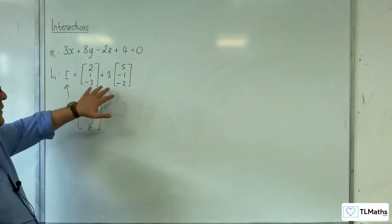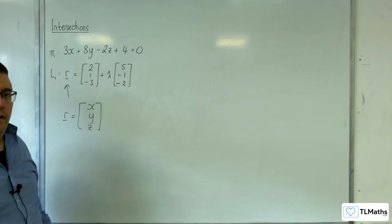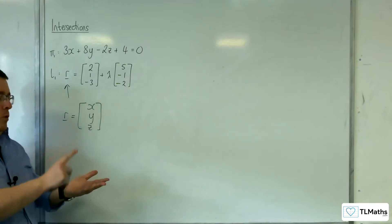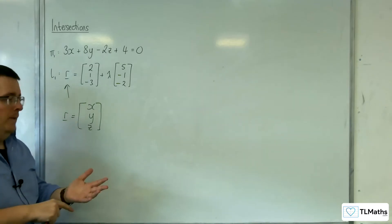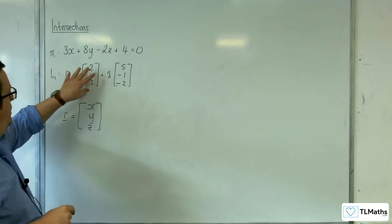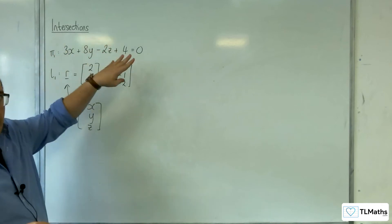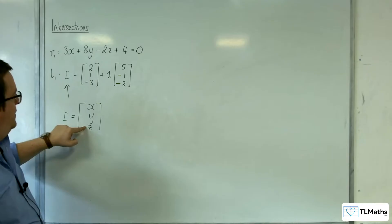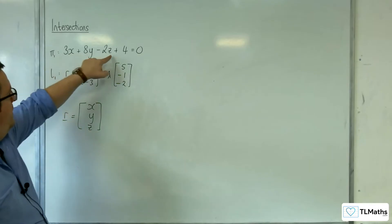So in order for this line to intersect this plane, I'm going to need a set of coordinates X, Y, Z that fits the equation of the line and the equation of the plane. So this X, this Y and this Z must be the same as that X, that Y and that Z.